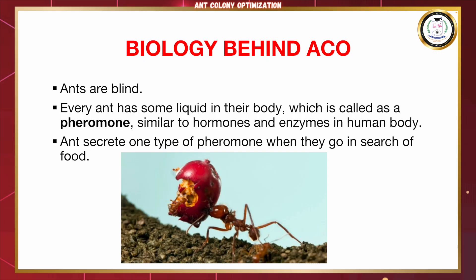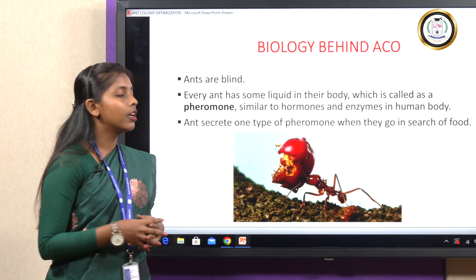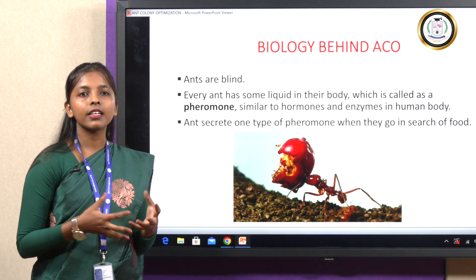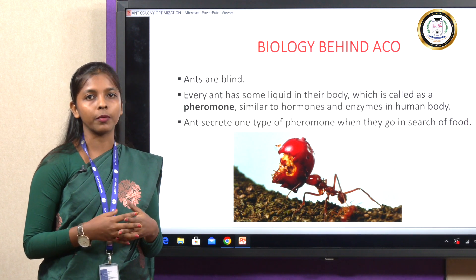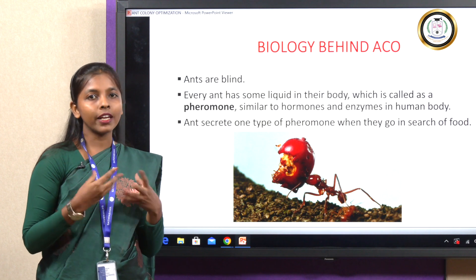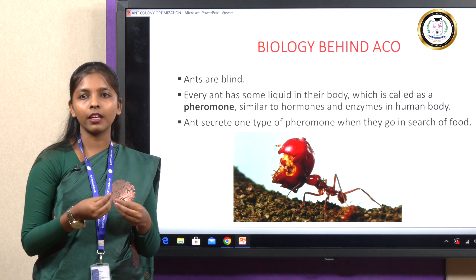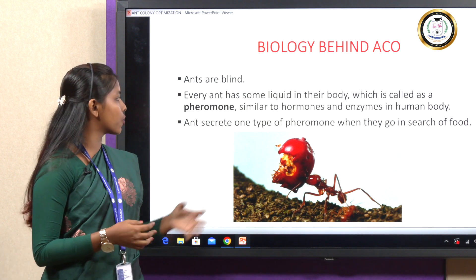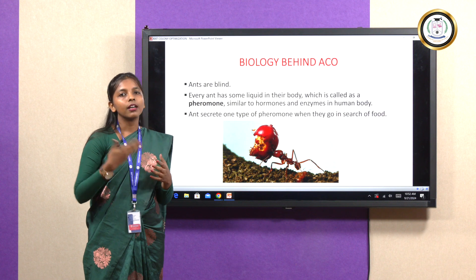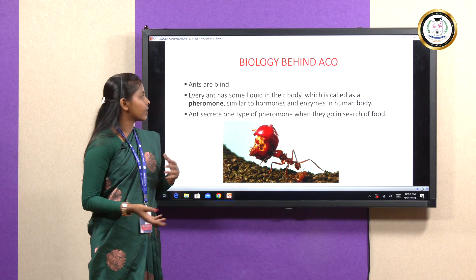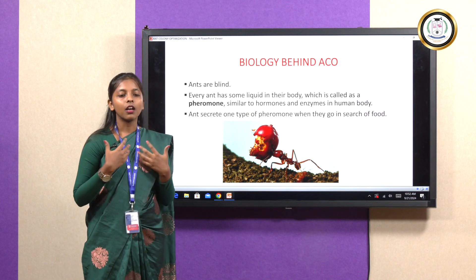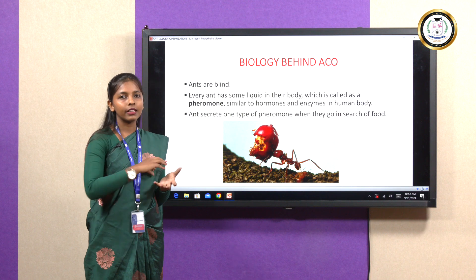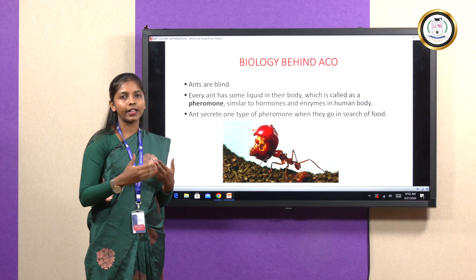So the biology behind ACO: basically ants are blind, and every ant has some liquid in their body called pheromone. This pheromone is related to hormones in the human body. We use language to communicate with each other, whereas ants use pheromone to communicate with one another. They produce pheromone when they go to find food, and the pheromone lies along the path where they go.